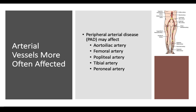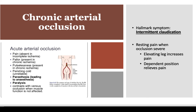Arterial vessels most affected by disease are the aortoiliac artery, femoral, popliteal, tibial, and peroneal artery — those are gigantic arteries. Patients end up going for fem-pop bypasses and similar procedures. For chronic arterial occlusion, the hallmark symptom is intermittent claudication; rest pain occurs with severe occlusion. Elevating the leg increases pain, so they only feel better in a dependent position — all diagnostic signs that help us understand the patient's condition.